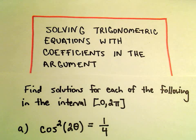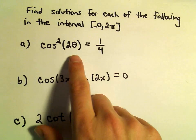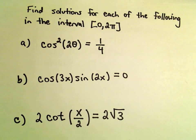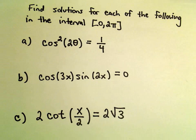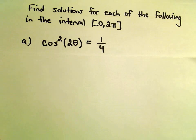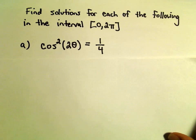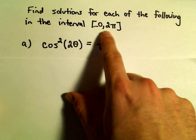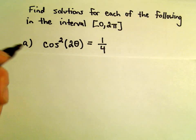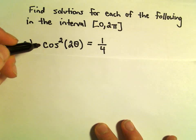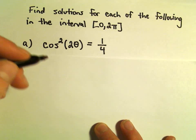In this video we're going to do an example of solving a trig equation with a coefficient in the argument. All that means is basically inside the parentheses, in front of the variable, we have different coefficients — not just a single theta or a single x. We're going to find solutions that fall in the interval 0 to 2π. So the first thing: we've got cosine squared of 2θ equals 1/4.